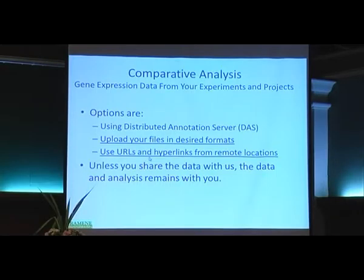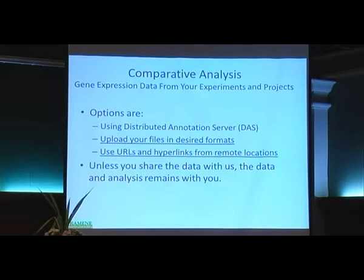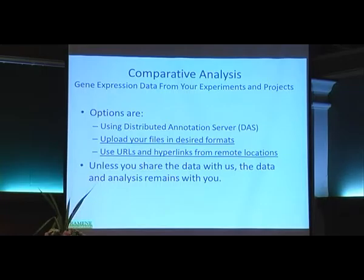The other option is web services. If you are running your own databases and provide web services, then users coming to Grameen can query your dataset remotely. We don't have to host or download your data. All users have to do is query — show me all the gene expression datasets from Arisa Express, or show me all the interactions for my genes of interest under this QTL region from your co-expression network analysis. Those can be queried remotely, and that would be an integrated resource. Grameen is already ready for that, and you can also query remote data from Grameen by typing your URL.